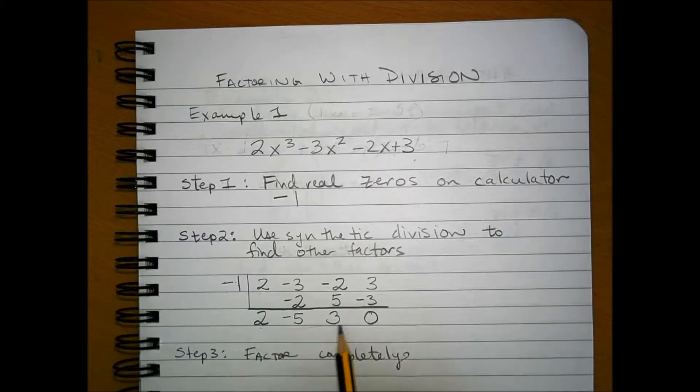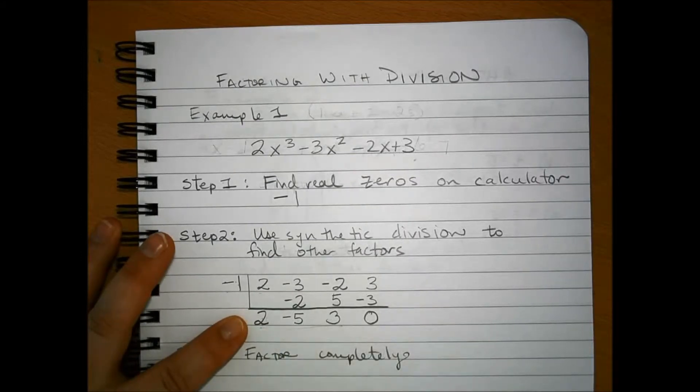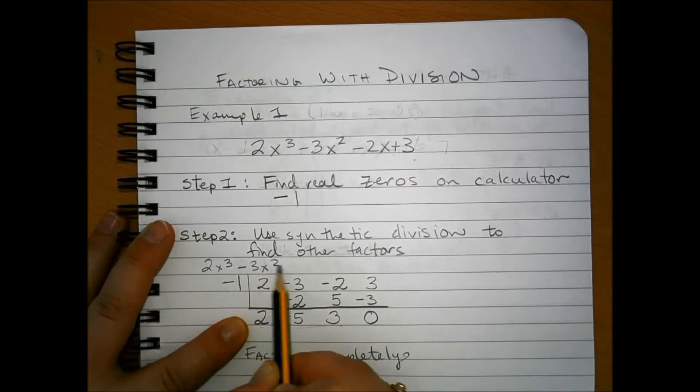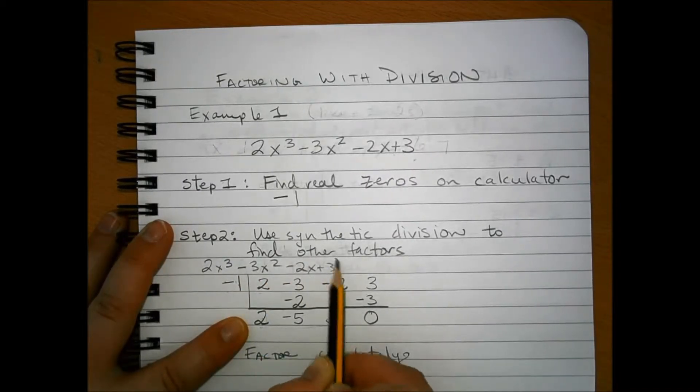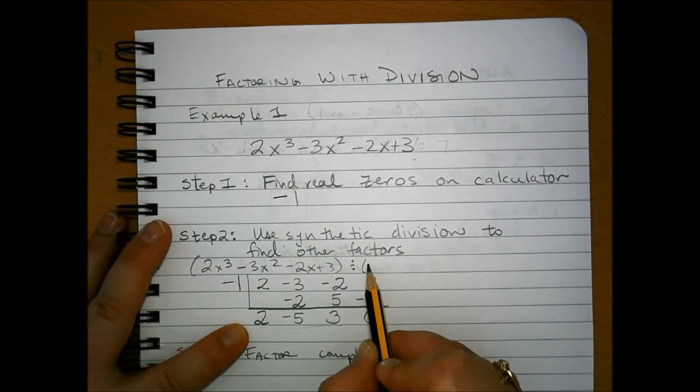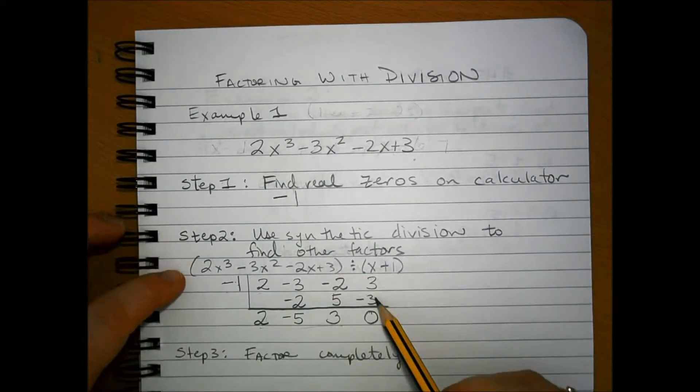Now, our resulting polynomial starting with the next lowest factor. Now, remember, think of this. We basically took 2x cubed minus 3x squared minus 2x plus 3 and divided by x plus 1. That's what this synthetic division does.